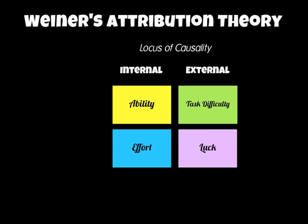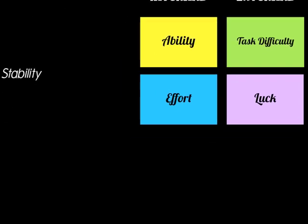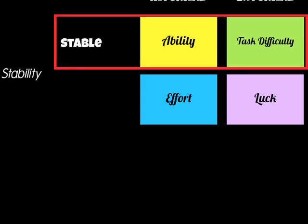To add complexity to this model, on the left-hand side we've also got stability factors. The first stability category is 'stable,' meaning the reasons you gave for your success or failure are enduring and very difficult to change. The stable factors would be your own ability — because in sports psychology, ability is genetically defined — and task difficulty, which is also a stable factor because it's external and out of our control.